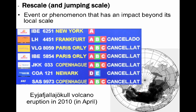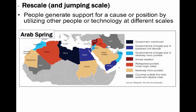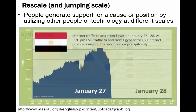Another way of looking at rescaling, or jumping scale, is when people generate support for a cause or position by utilizing other people, or technology such as the internet, at different scales. In 2011, a major nationalist and pro-democratic movement exploded in the Middle East known as the Arab Spring. When people want to start a movement or revolution, they need to spread the word. Since this occurred in the age of mass and social media, the internet proved to be the perfect medium to diffuse their ideas and gain followers and momentum. The governments knew this as well, and several Middle Eastern states restricted internet traffic to numerous websites, as you can see happened quite abruptly in Egypt. The governments in power also imprisoned people they believed to be dangerous to the state. So in sum, scale is clearly an invaluable tool in the field of geography.